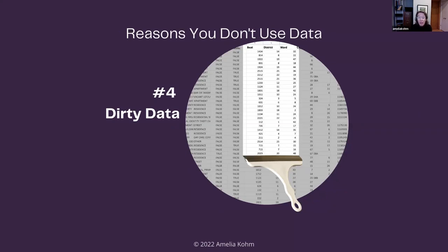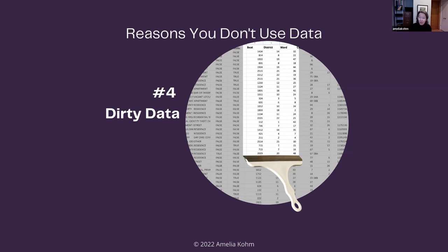Dirty data is another problem. Some nonprofits have low-level staff entering data into management information systems, CRMs, or spreadsheets, and multiple staff members each entering data a little bit differently. The result is dirty data — inaccurate because it hasn't been entered consistently. For example, if a participant named Michael Smith drops out and comes back as Michael B. Smith, the database treats them as two different people, so you can't get a clear analysis of his trajectory. If you have many such cases, your data won't be reliable.